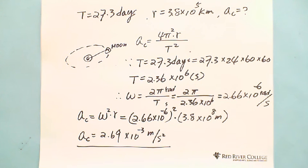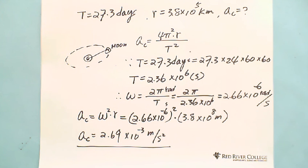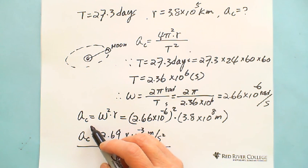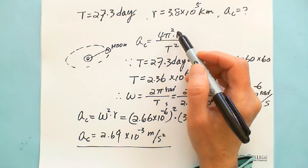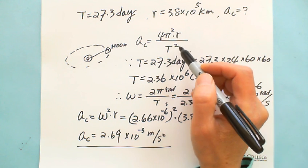So we have formulas to calculate centripetal acceleration depending on the information given. If given tangential velocity, use V squared over R. If given angular velocity, use omega squared times R. If given the period, use 4π² times R divided by T squared.